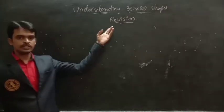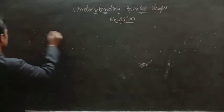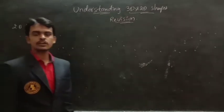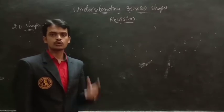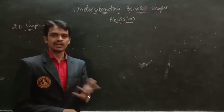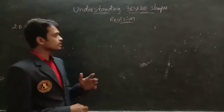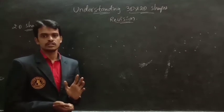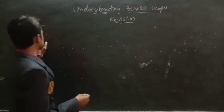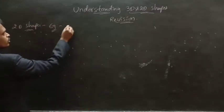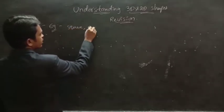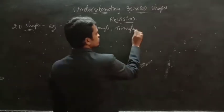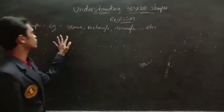We will revise this topic: understanding 3D and 2D shapes. First, 2D shapes. The definition of 2D: objects which have two dimensions — length and breadth, or base and height — are called 2D shapes. Examples: square, rectangle, triangle, etc. These are the examples of 2D shapes.